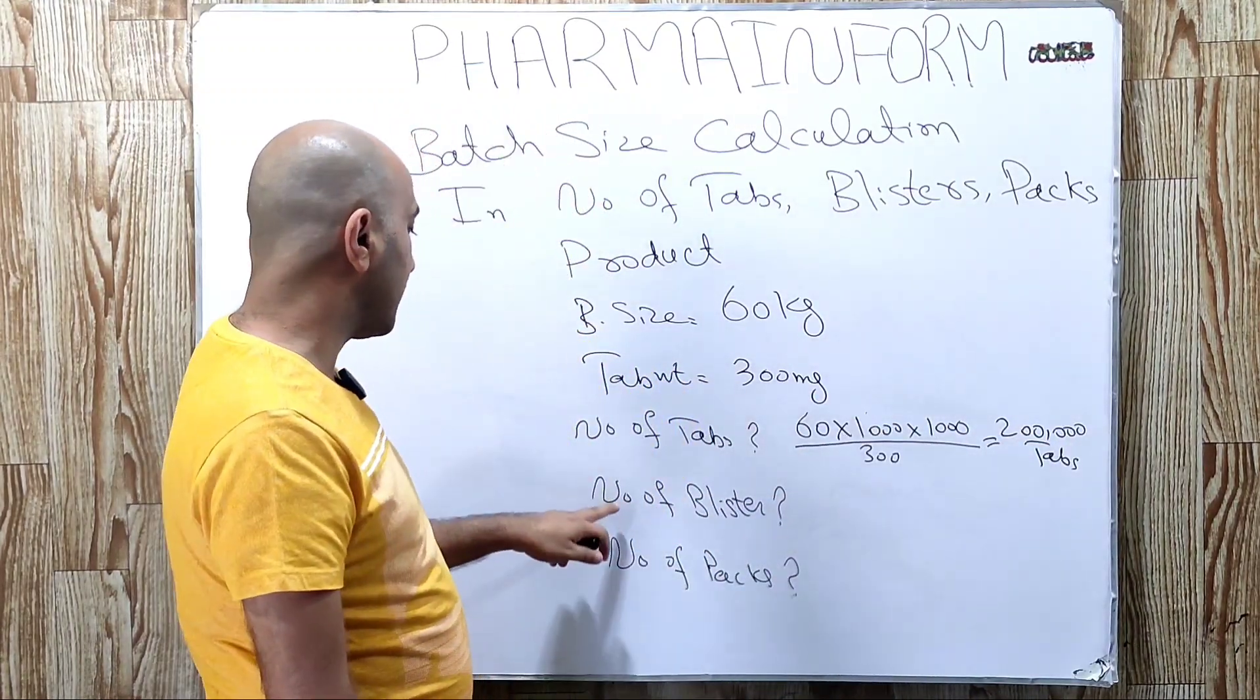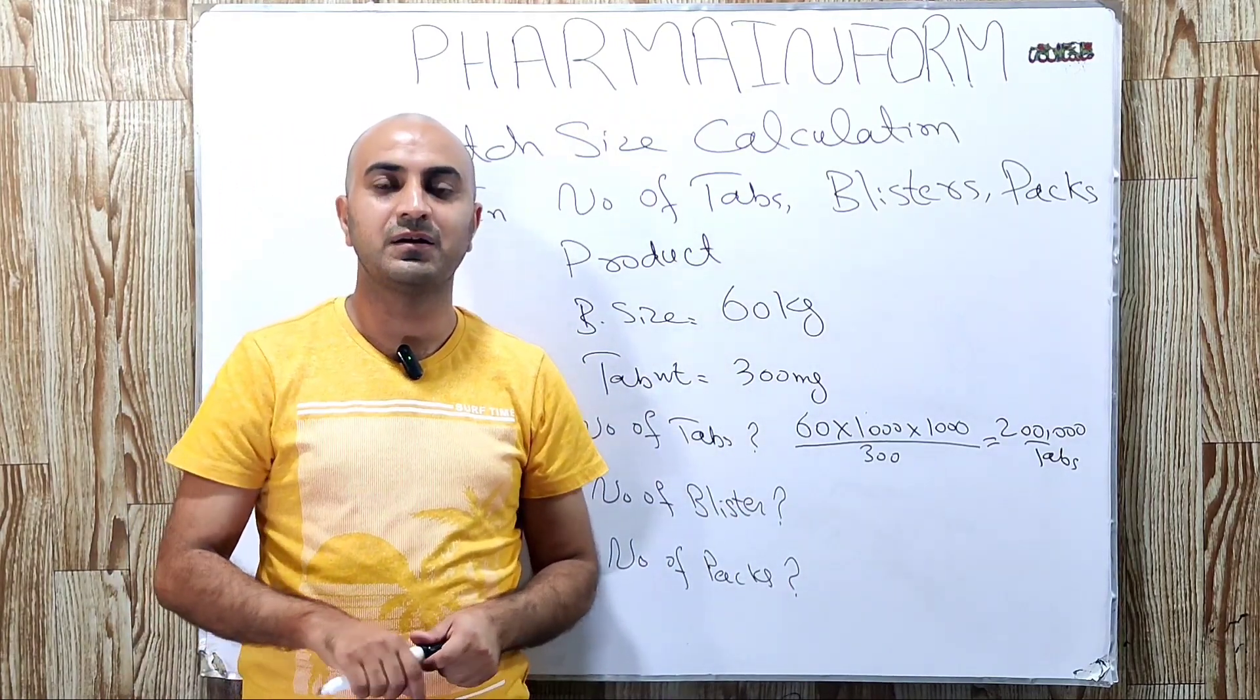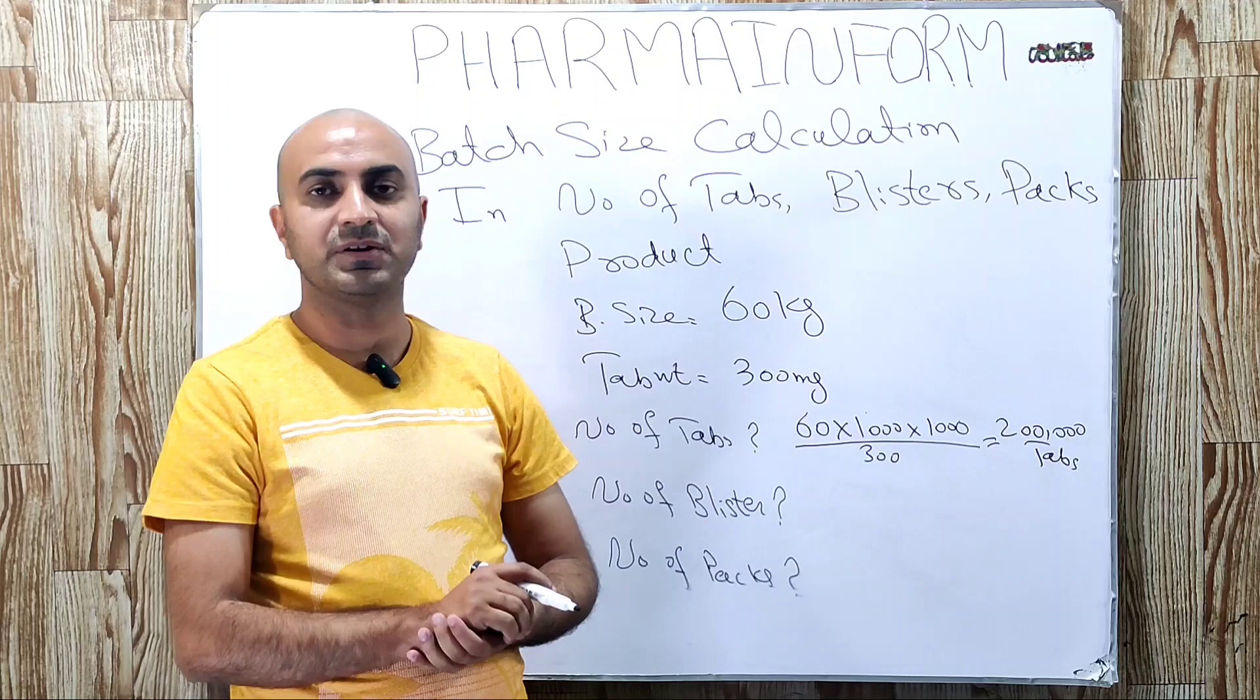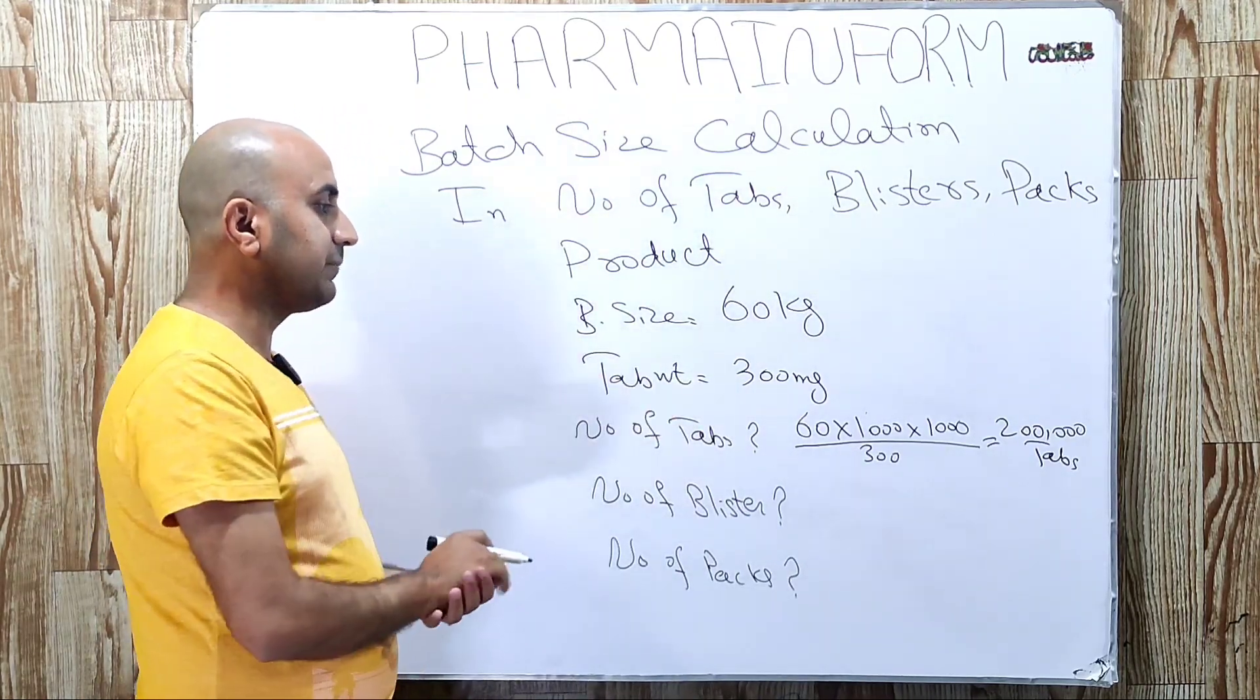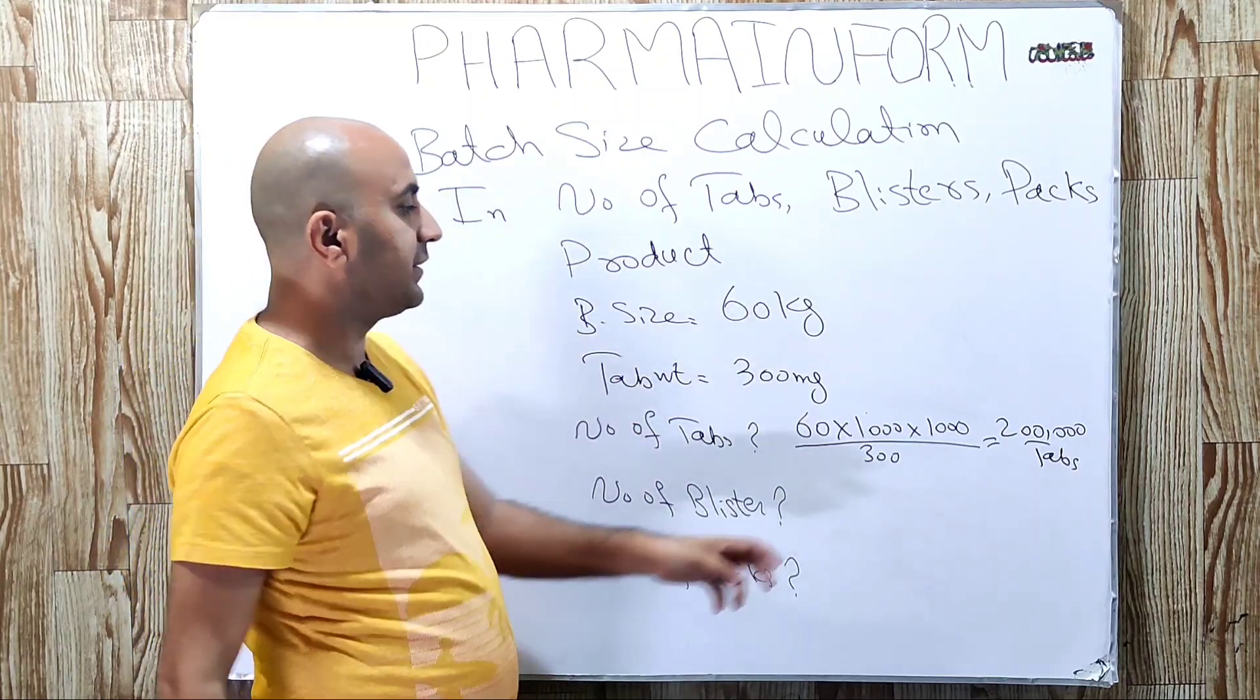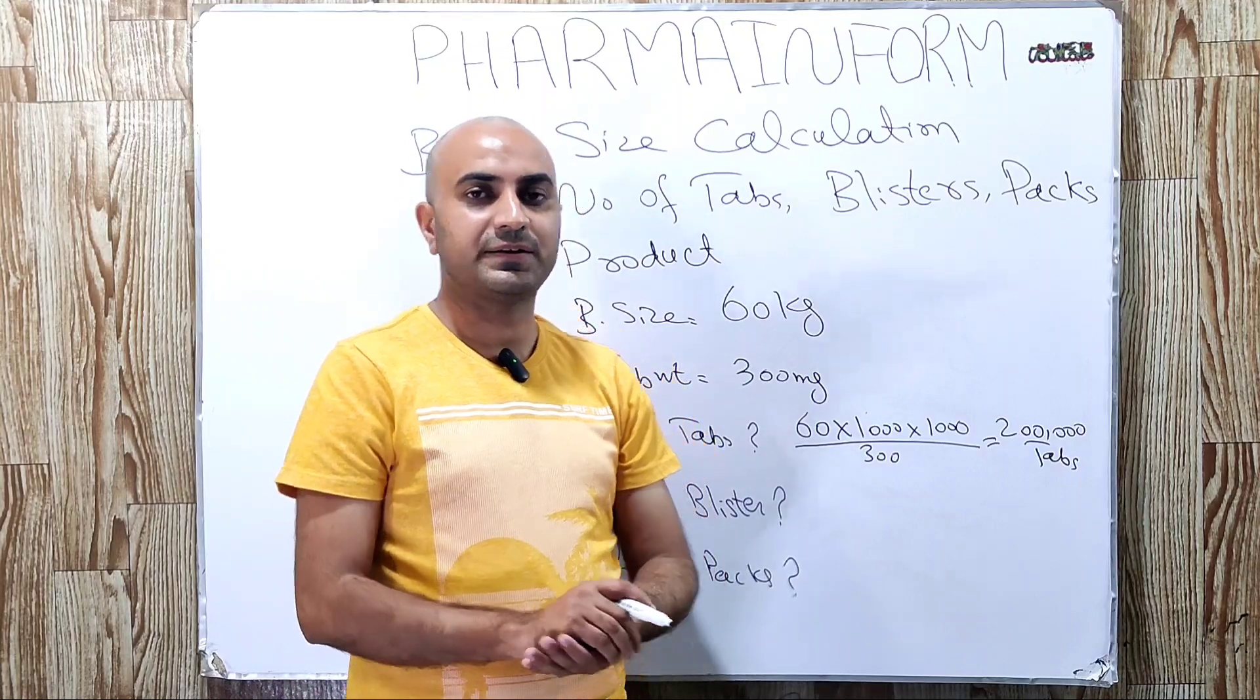Now we want to calculate number of blisters. Our BPR (Batch Packaging Record) shows each blister contains 10 tablets. How many blisters will be formed from 2 lakh tablets? The calculation is very simple.